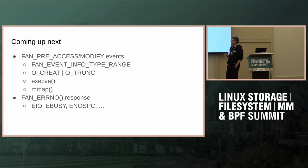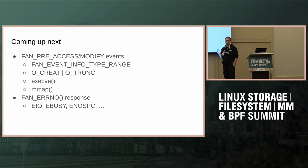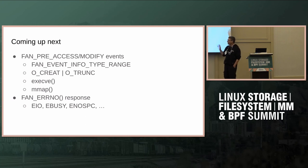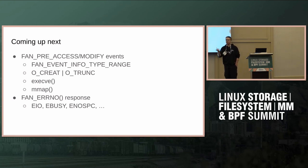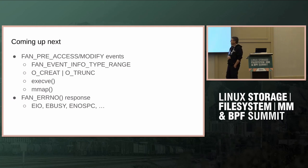Another thing we added in the work-in-progress branch is the ability to return a different error. With FNotify permission events, you used to only be able to return either success or EPERM. With these new events, you can now return a few other errors like EBUSY or ENOSPC, which makes sense for these types of use cases.